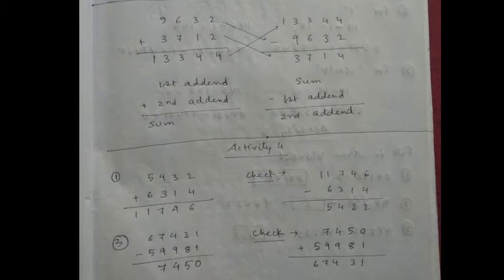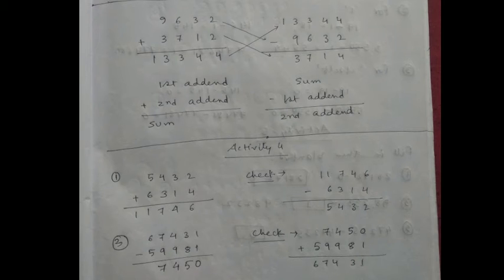Number 3: 67,431 minus 59,981. The minuend matches with the first number, confirming the answer. So Activity 4 is finished. Now we move on to the properties of subtraction — for zero, for one, and for itself.